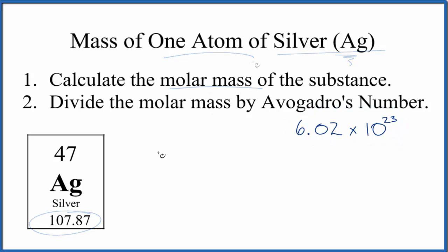So let's do it. Now, you can think of this average atomic mass here as having the units grams per mole. So we have 107.87 grams in one mole of silver.